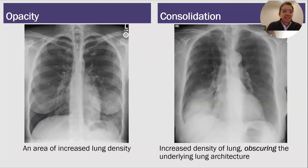This is an opacity. An opacity is an area of increased lung density. And a consolidation is an area of increased lung density that obscures the underlying lung architecture.